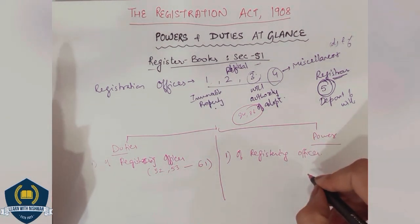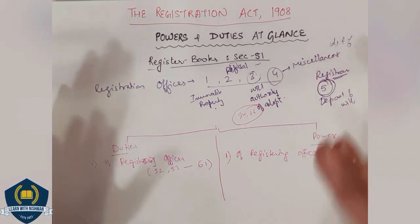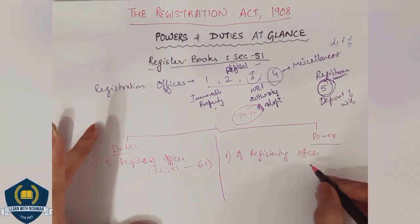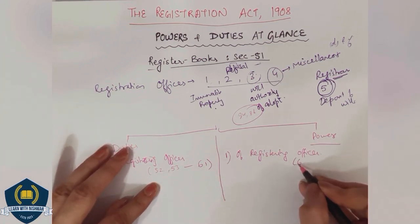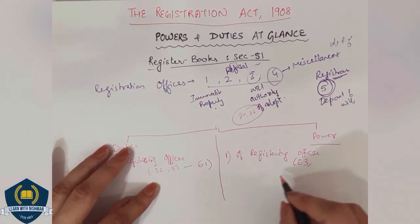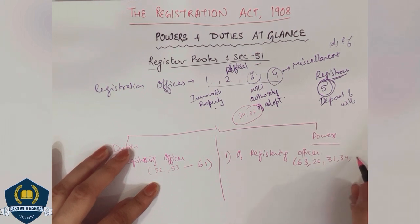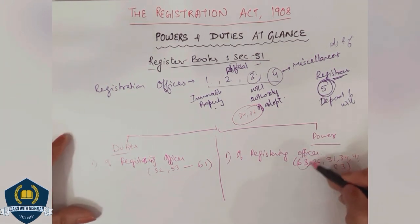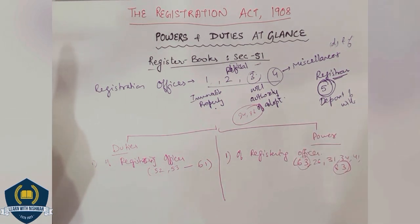And the powers of the registering officer: some sections we have already covered. Section 63 will come here in powers. Section 26 we have already done, 31 already done, 34 done, 41 done. Then section 83 will come — so sections 63 and 83 are the main powers of the registering officer we will study going forward.